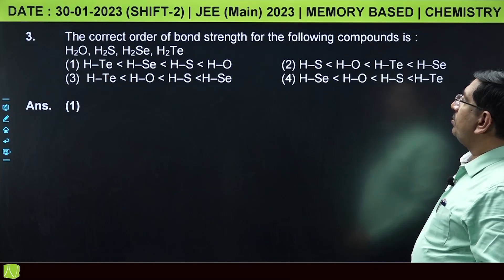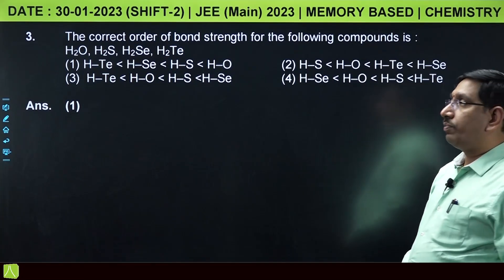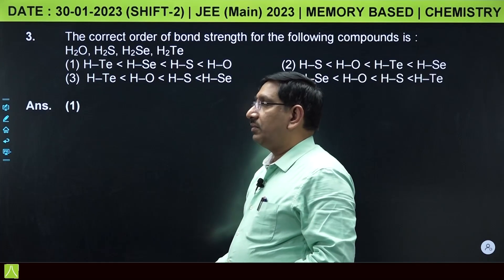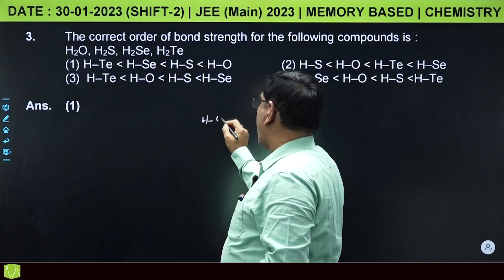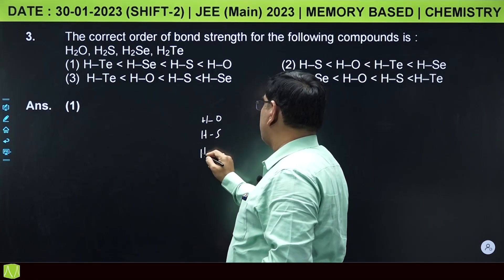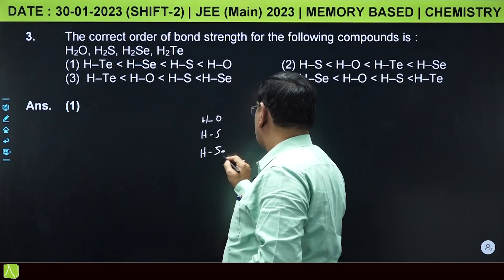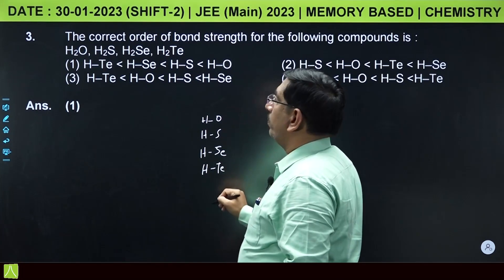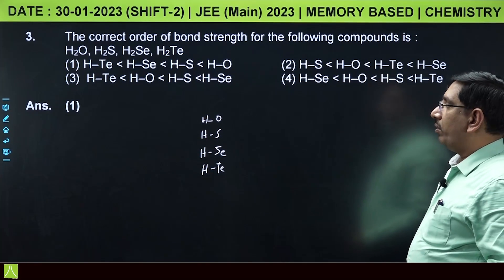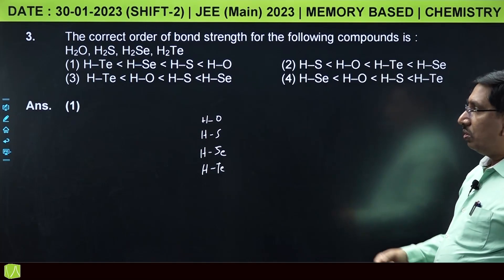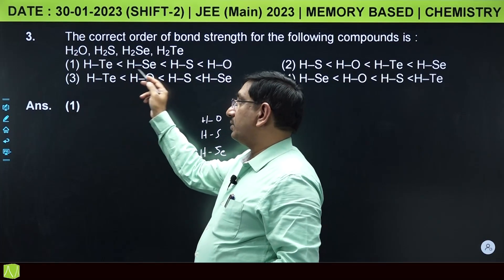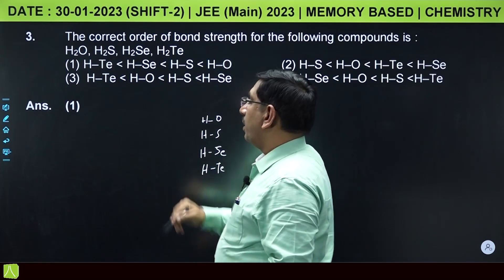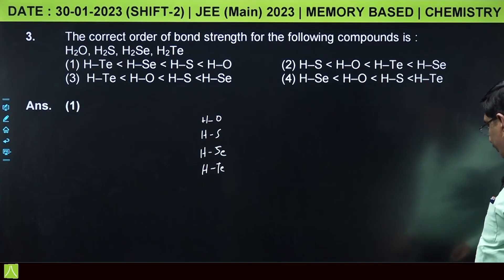The correct order of bond strengths of the following compounds: These are 16th group hydrides. From top to bottom as the atomic size increases, bond length increases and bond strength decreases. So the correct order of bond strength is hydrogen telluride less than hydrogen selenide less than hydrogen sulfide less than water. The correct order is 1.